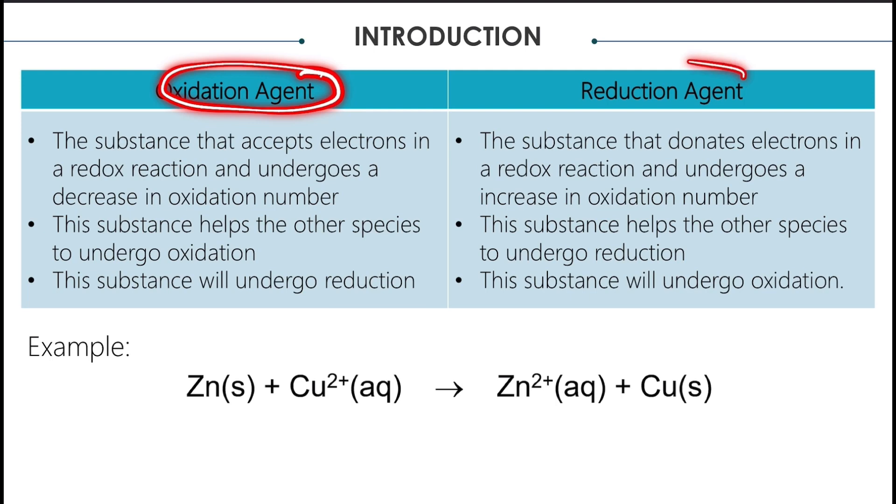Let's take a look at oxidation agent, or oxidizing agent, and reduction agent, or reducing agent. The oxidation agent is the substance that accepts electrons in a redox reaction and undergoes a decrease in oxidation number. This substance will help the other species to undergo oxidation, and this substance will undergo reduction.